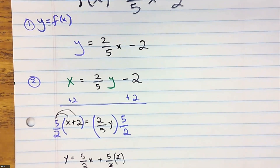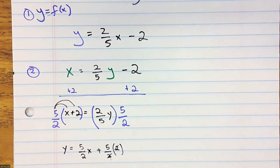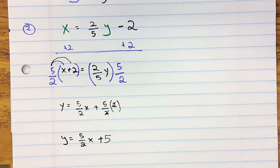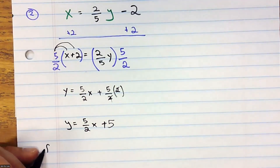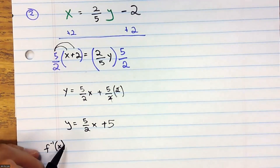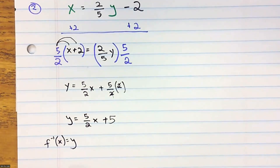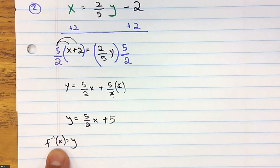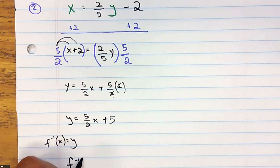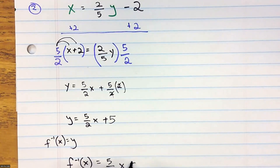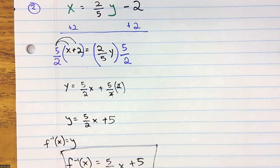The last step is to write the answer using inverse function notation. So instead of y, we write f inverse of x equals (5/2)x plus 5. That is the inverse function.